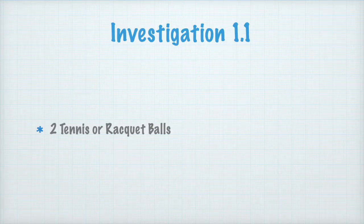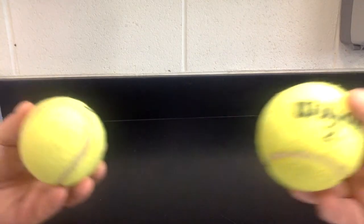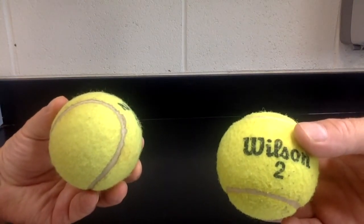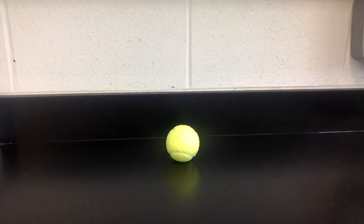For investigation 1.1 you merely need two tennis balls or racquet balls. The lab instructions will have you rolling the two balls together so that they collide and observing what happens.